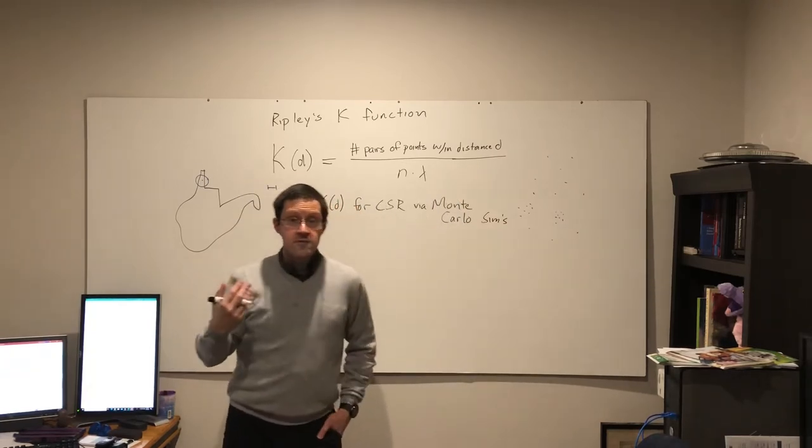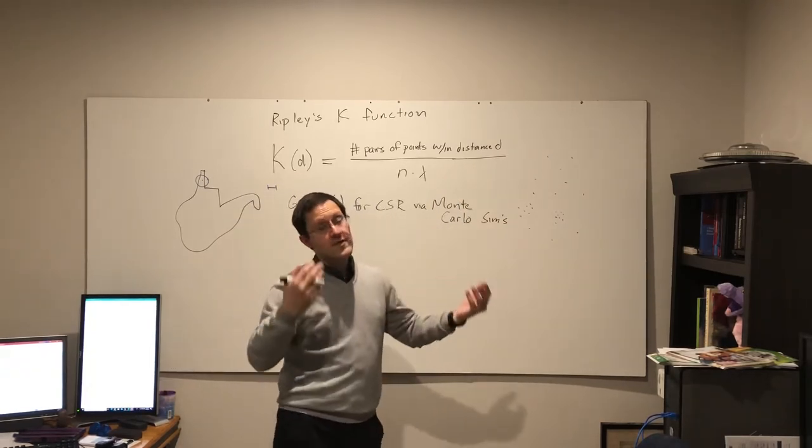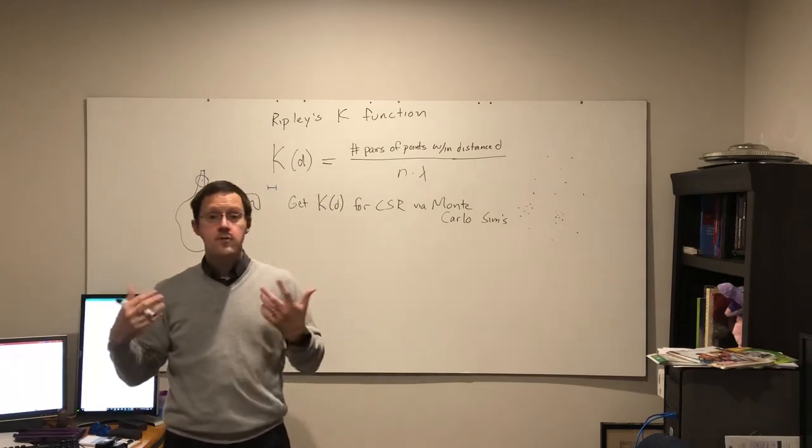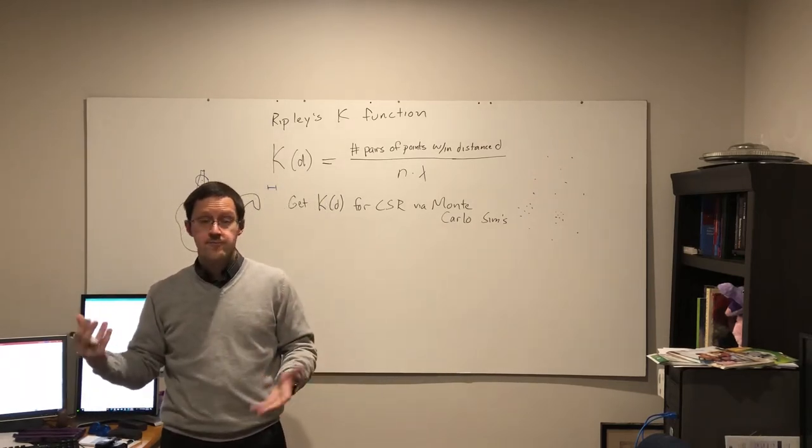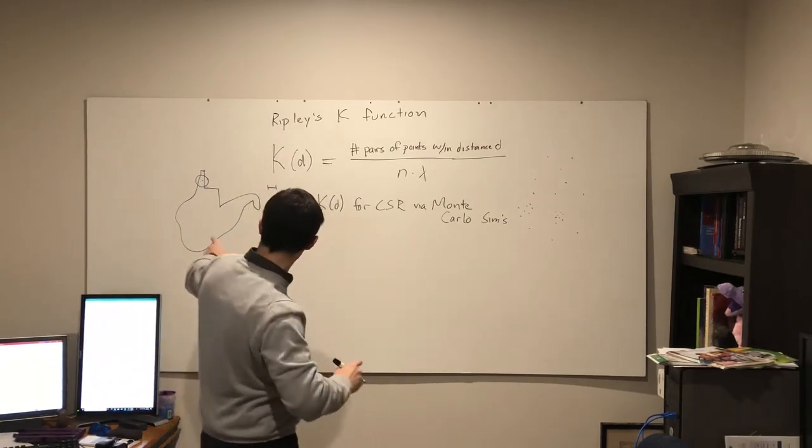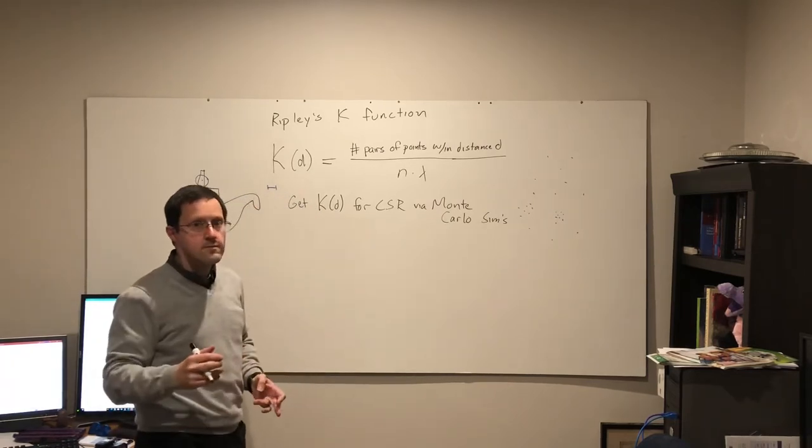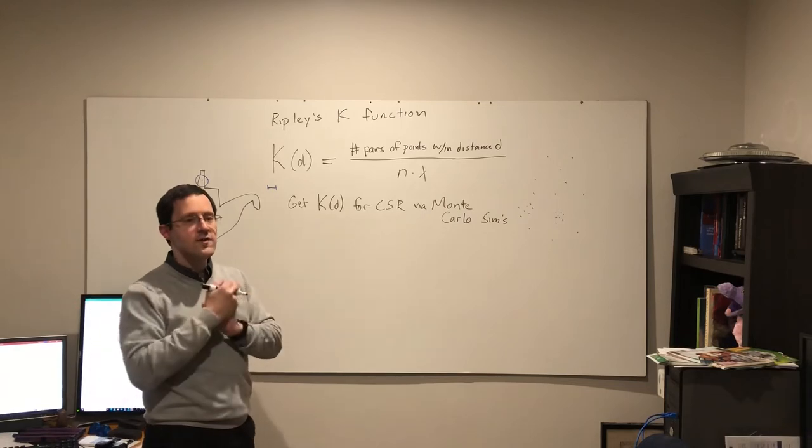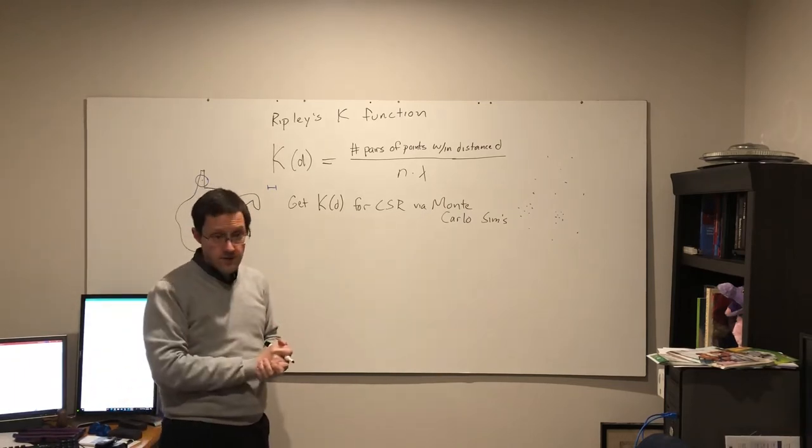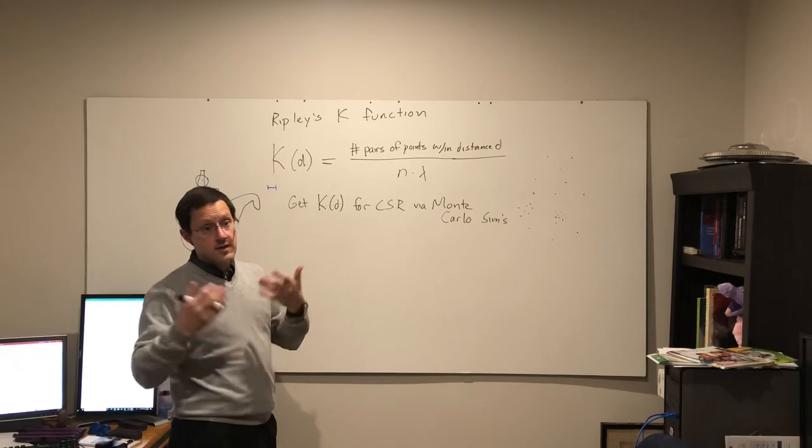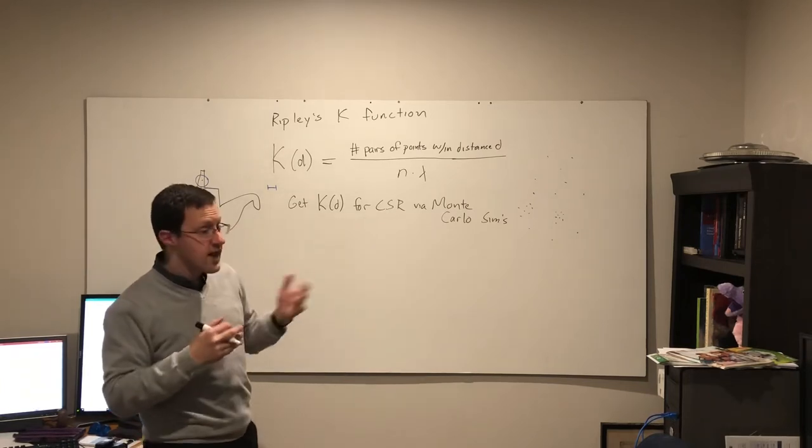We use Monte Carlo simulations to come up with what Ripley's K should be under complete spatial randomness. So it basically ends up meaning if I have 58 points here, I just randomly scramble them. I assign their locations randomly within the state and I assume that means I have complete spatial randomness.